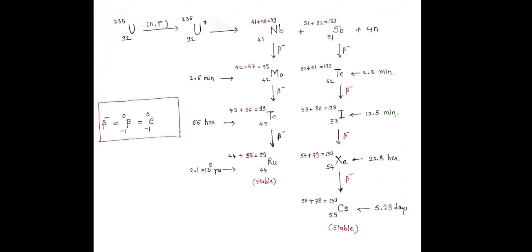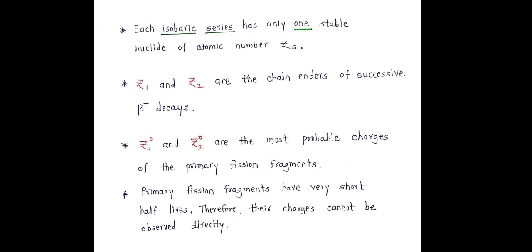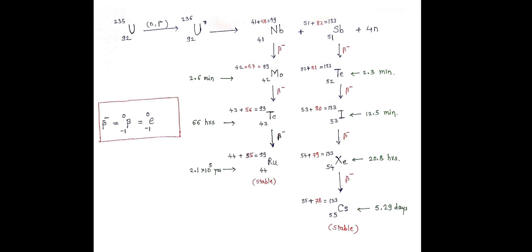Now we have to correlate it with the charge distribution. In charge distribution, each isobaric series has only one stable nuclide of atomic number, say Zs. In this example, this is an isobaric series; similarly, this is also an isobaric series. That isobaric series has only one stable nuclide. Niobium is unstable, therefore it undergoes successive beta-emission to give stable ruthenium. In this series, there is only one stable nuclide — ruthenium — and in this series, the only stable nuclide is CCM. So each isobaric series has only one stable nuclide.